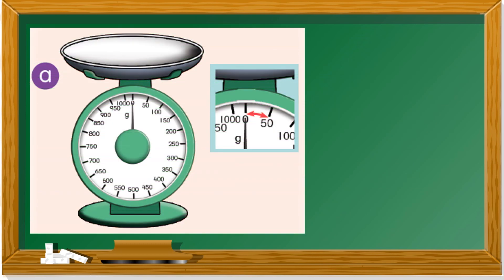Now let's take a look at this manual weighing scale. Do you remember graduation? Graduation — jarak di antara dua garis kecil — means the distance between two small lines. So each graduation on this scale is 50 grams. Each interval is 50 g — jarak di antara setiap dua garis ialah 50 g ataupun 50 gram.